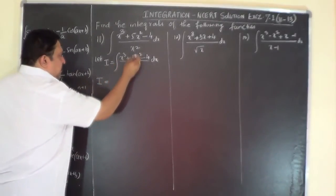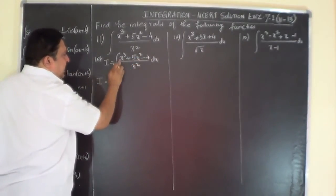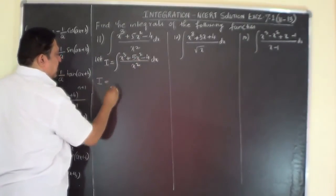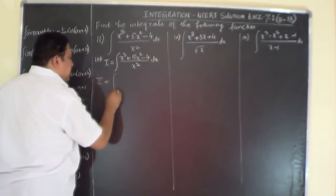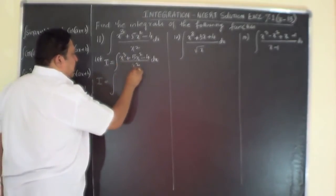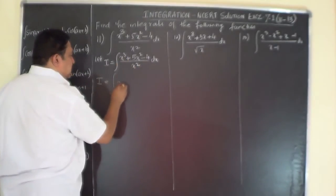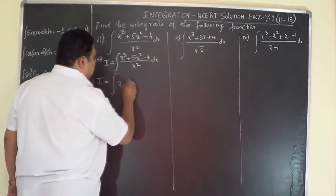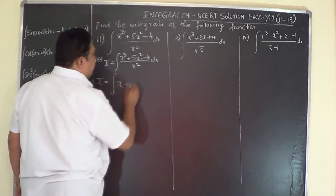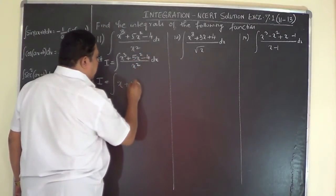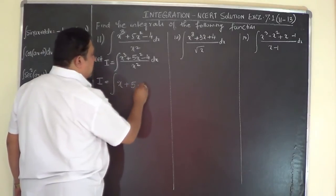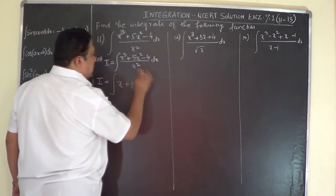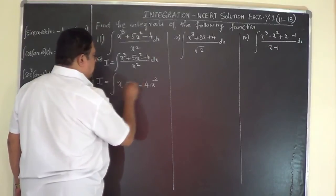Now start separating each term: divide x³ by x², divide 5x² by x², and divide 4 by x². This gives the integral of: x³/x² = x, plus 5x²/x² = 5, minus 4/x² which is 4 times x to the power of minus 2.